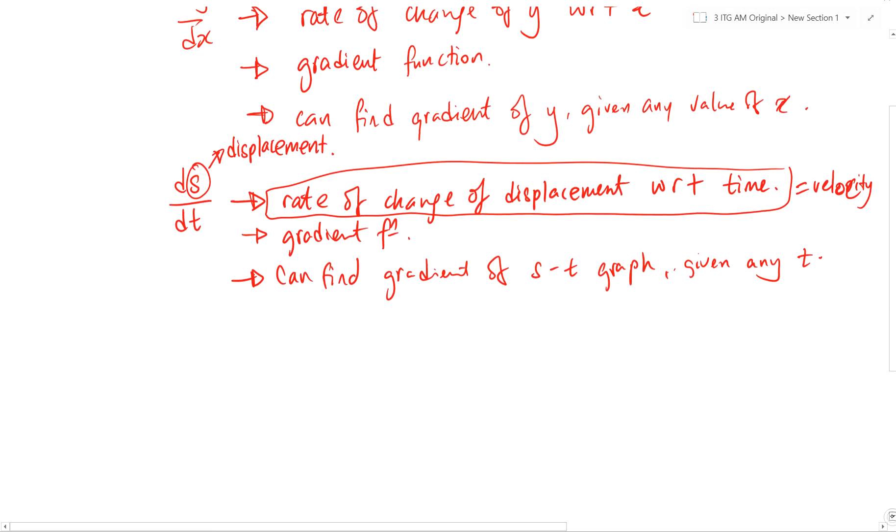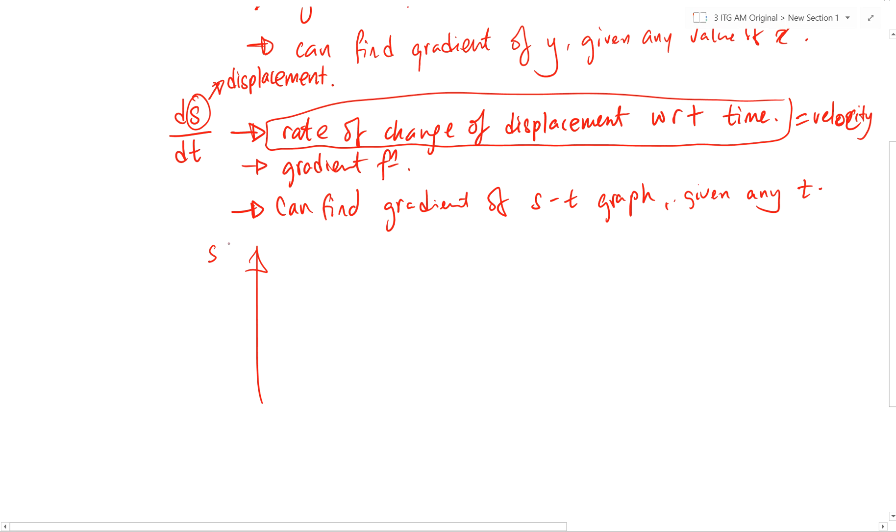S for displacement. And this is my time. T. Whatever it looks like. Maybe it looks like this. This means that when time equals to 0, it has a certain displacement already. It did not start from the origin. It started from maybe 1. Then the displacement starts to increase. It went further and further away. And at any point in time over here, if I find the gradient, I can find the velocity.